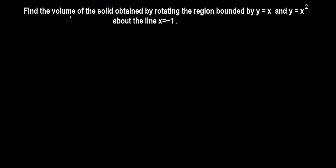Find the volume of the solid obtained by rotating the region bounded by y equals x and y equals x squared about the line x equals negative 1.